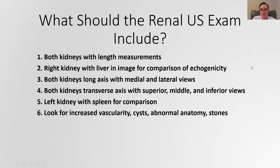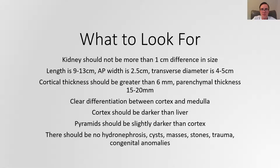You're also looking for a variety of abnormalities: increased or decreased vascularity, cysts, abnormal anatomy, or stones. The kidneys should be about the same size — no more than about one centimeter difference in any dimension. The length should be about 9 to 13 centimeters, while the AP width or front-to-back dimension should be about 2.5 centimeters, and the transverse diameter should be about 4 to 5 centimeters. Much bigger or smaller than that and you start to worry. The other important thing is measuring the cortical thickness and the parenchymal thickness.